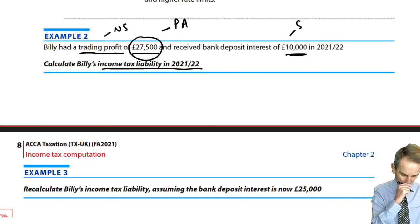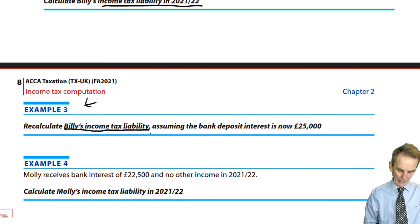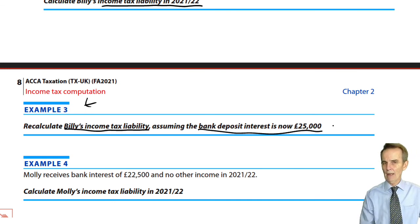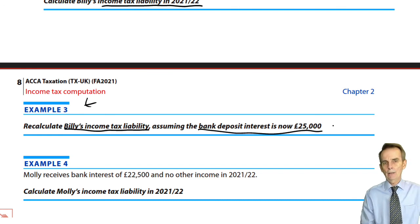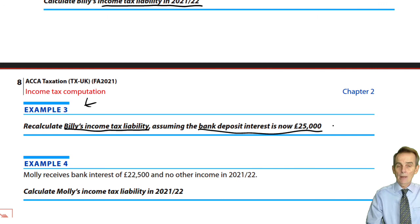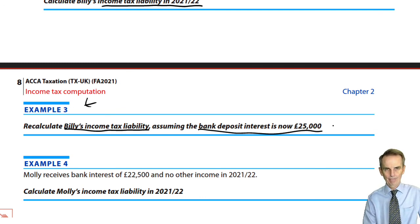Before our next lecture, please attempt example 3 — recalculate Billy's income tax liability assuming the bank deposit interest is now £25,000 rather than £10,000. Consider what that larger figure does to the type of taxpayer Billy has become, and the impact on the available savings income nil rate band. We will go through that answer at the start of the next lecture, then work through how and where the 0% starting rate applies.